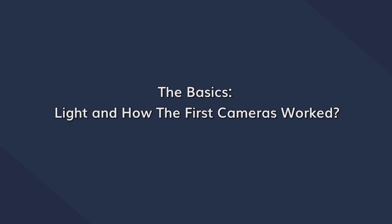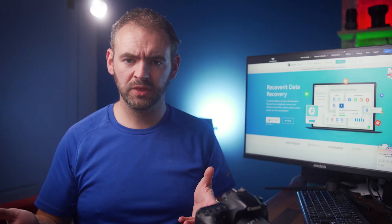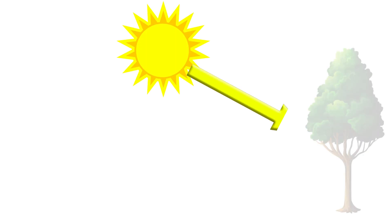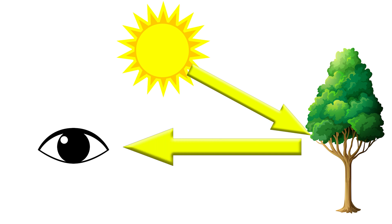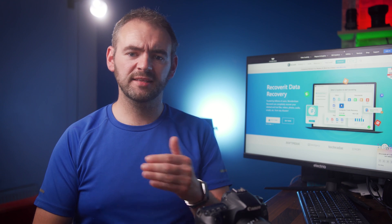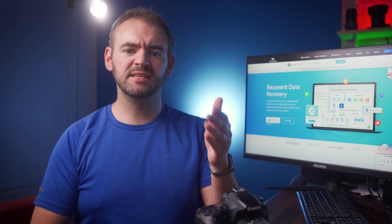Now to understand the workings of a camera, you first have to understand how the human eye sees an object. The objects that we see are actually light that is traveling from a light source, such as the sun, and it reflects off an object and then it enters our eye. A digital camera works in a very similar way — the reflected light is traveling into the camera rather than our eye.